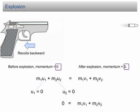When the gun is fired, the bullet moves forward while the gun recoils backward.